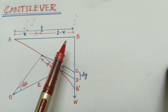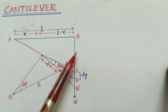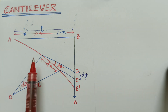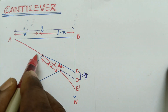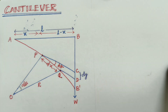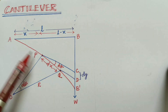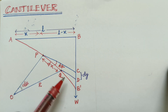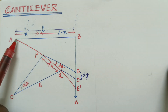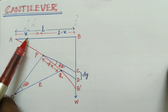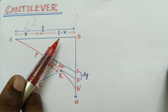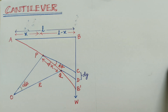The end B is depressed by a distance B-dash, which represents the vertical depression. Now consider a section of the cantilever at point P and Q at a distance X. P is considered at a distance of X from A, then the distance from P to B-dash is L minus X.